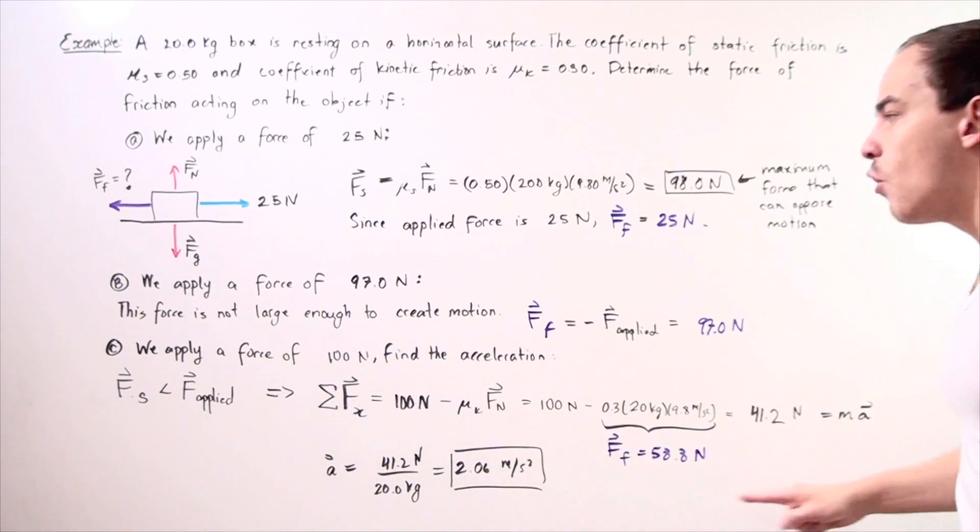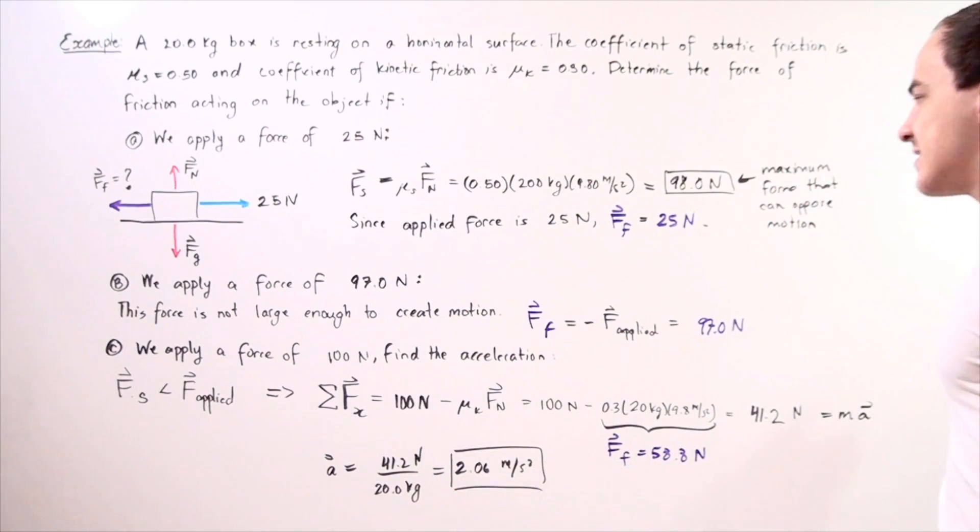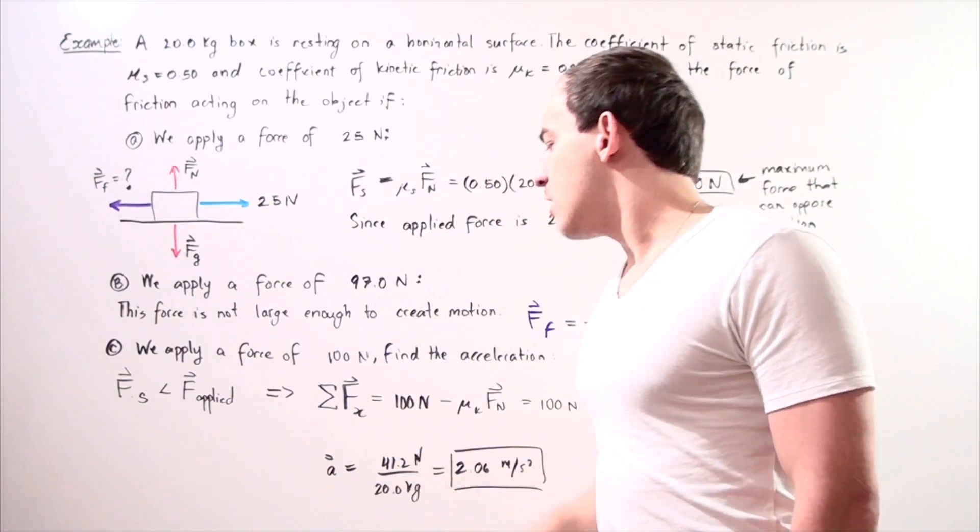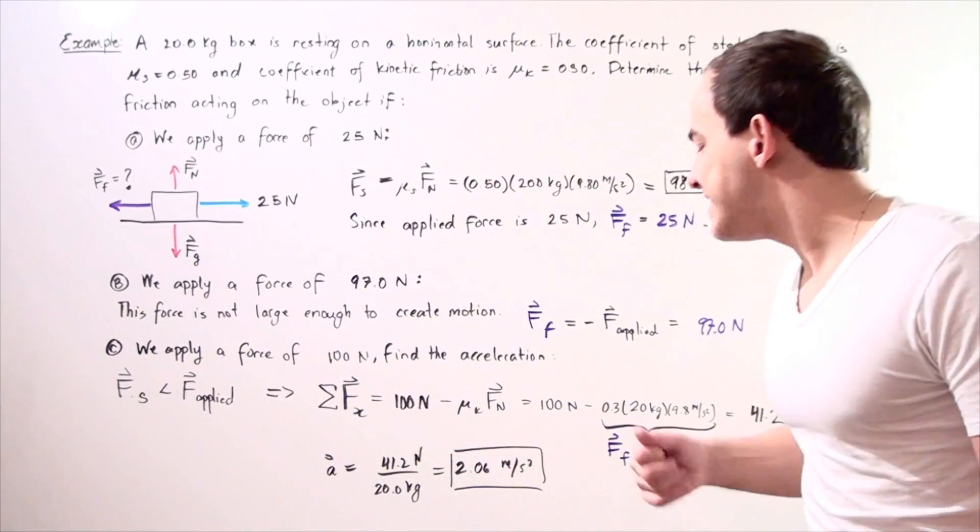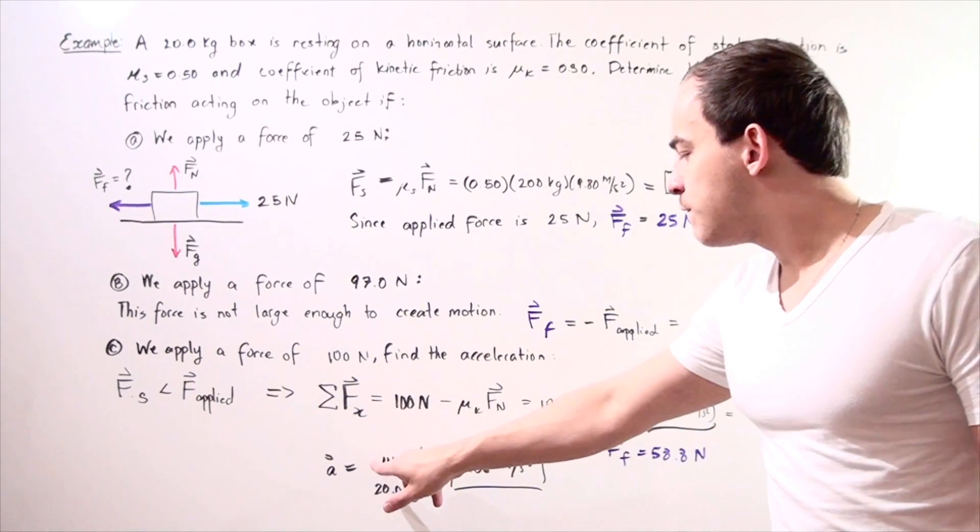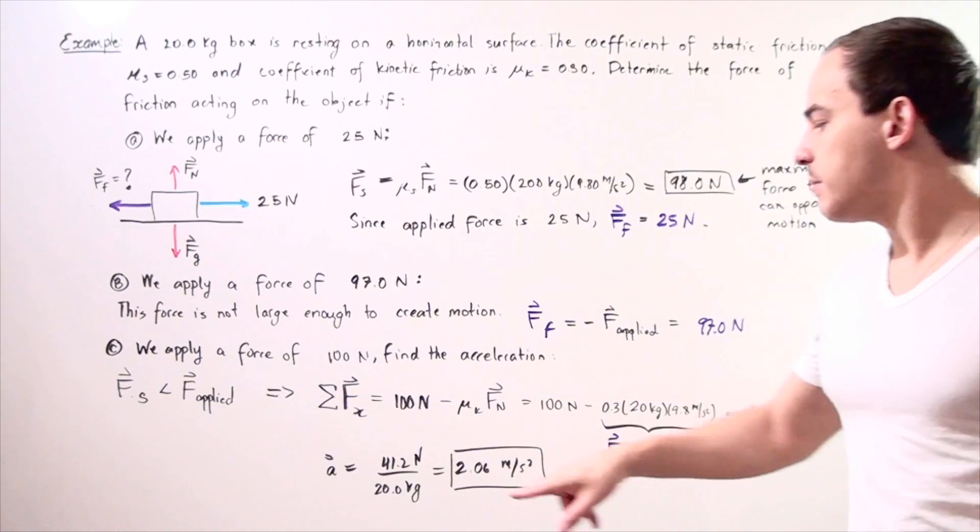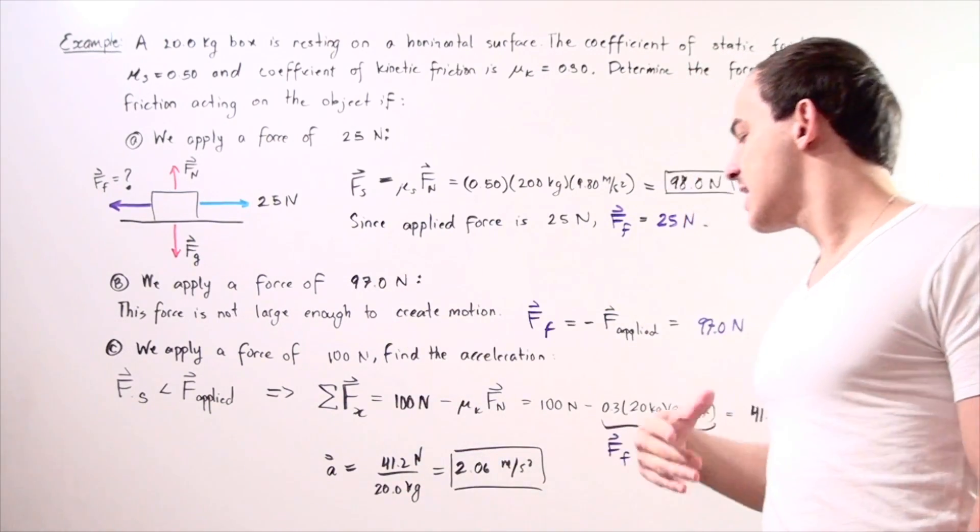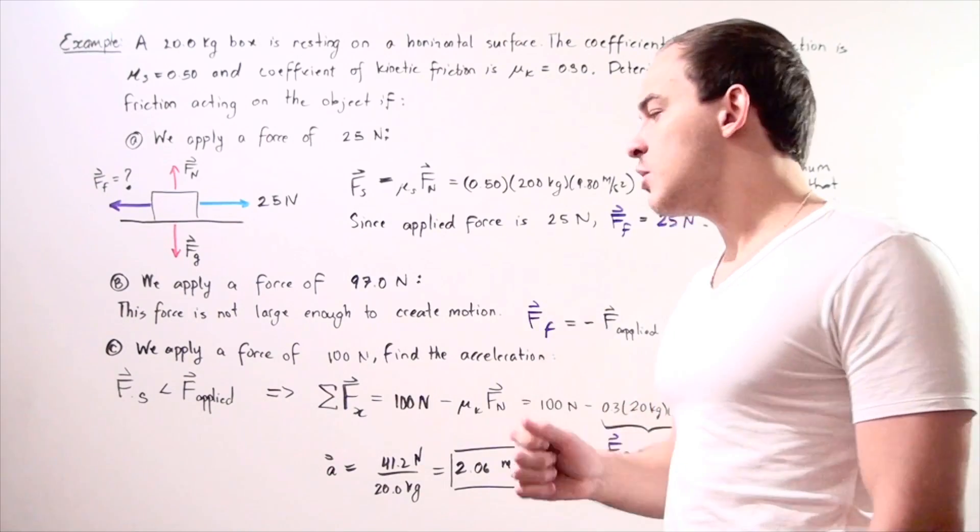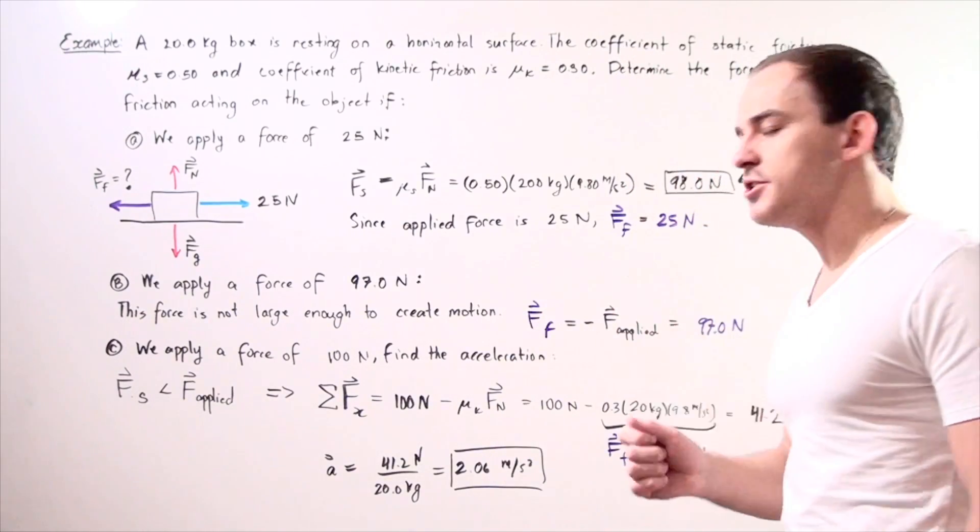This is the net force acting on our object along the x axis in the positive direction. We must set it equal to mass times acceleration. We bring over the mass and we find that our acceleration of the object when a net force of 41.2 newtons is applied is equal to 41.2 newtons divided by 20 kilograms, our mass, and we see that our acceleration is 2.01 or approximately 2.1 meters per second squared.